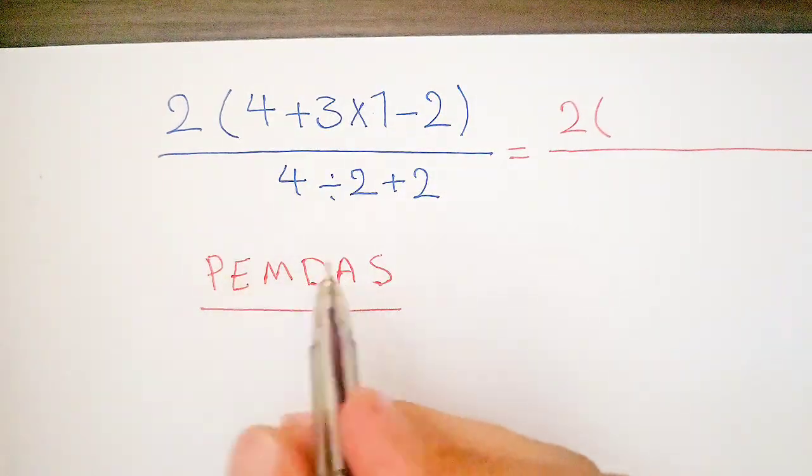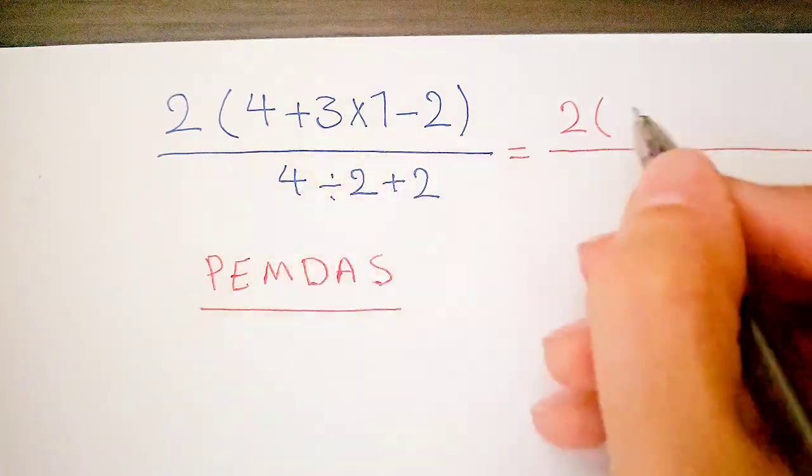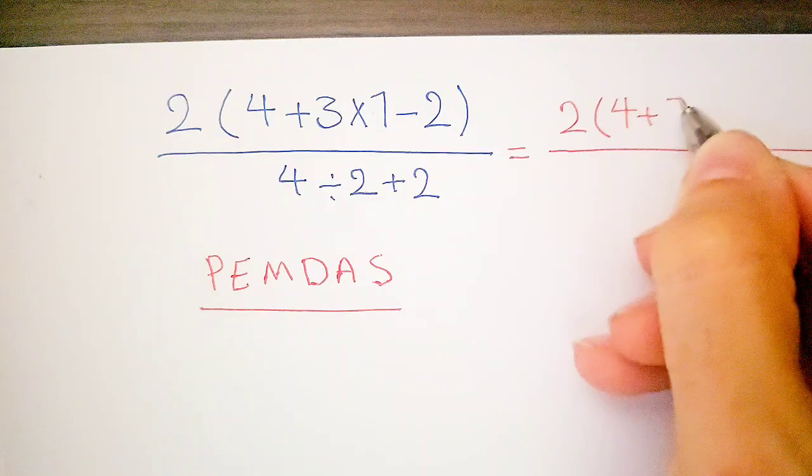Multiplication has the higher priority over subtraction and addition. First we do multiplication: 3 times 1 equals 3.